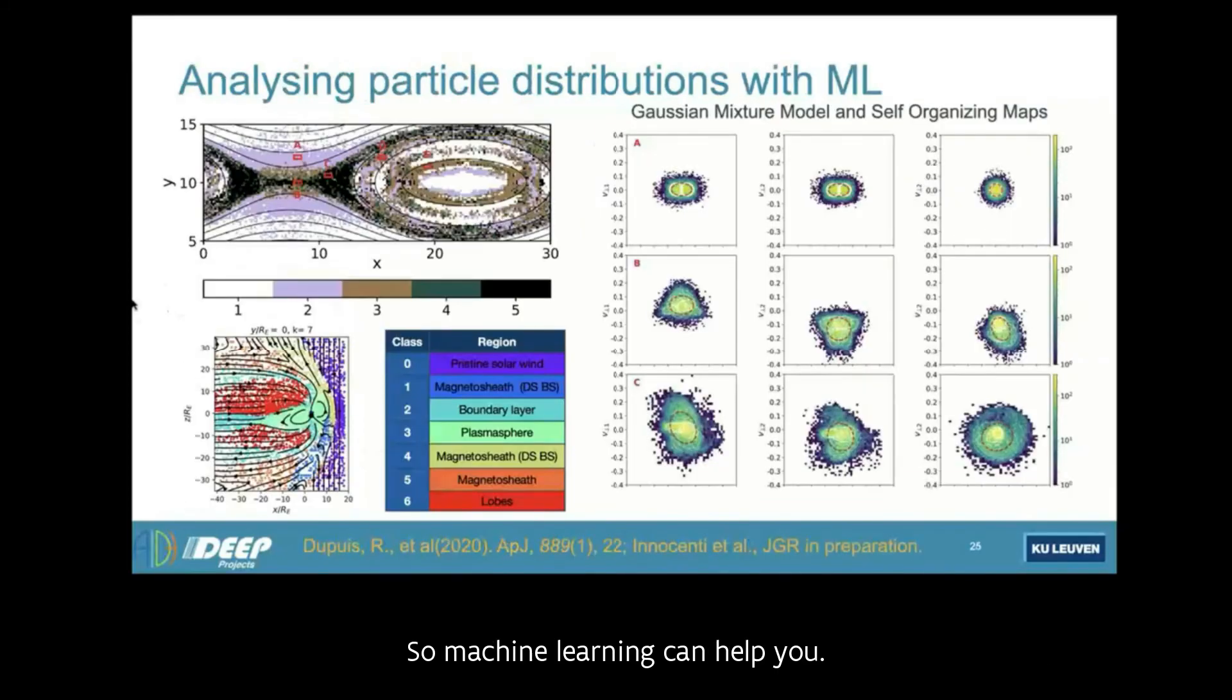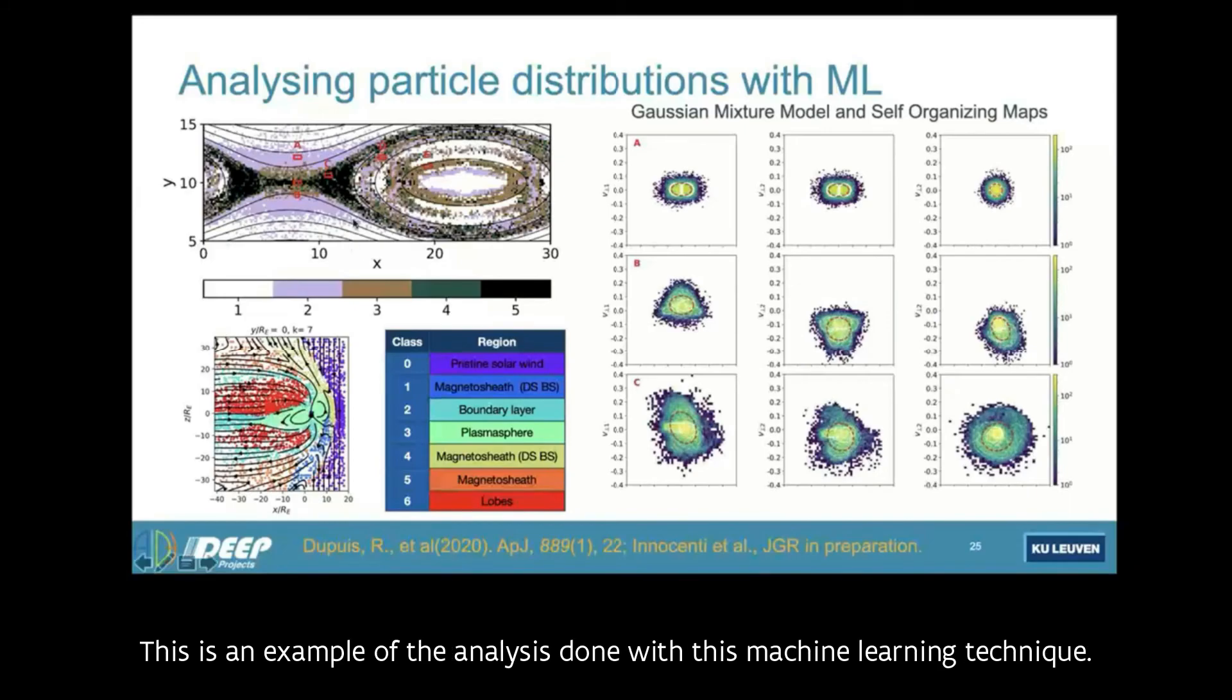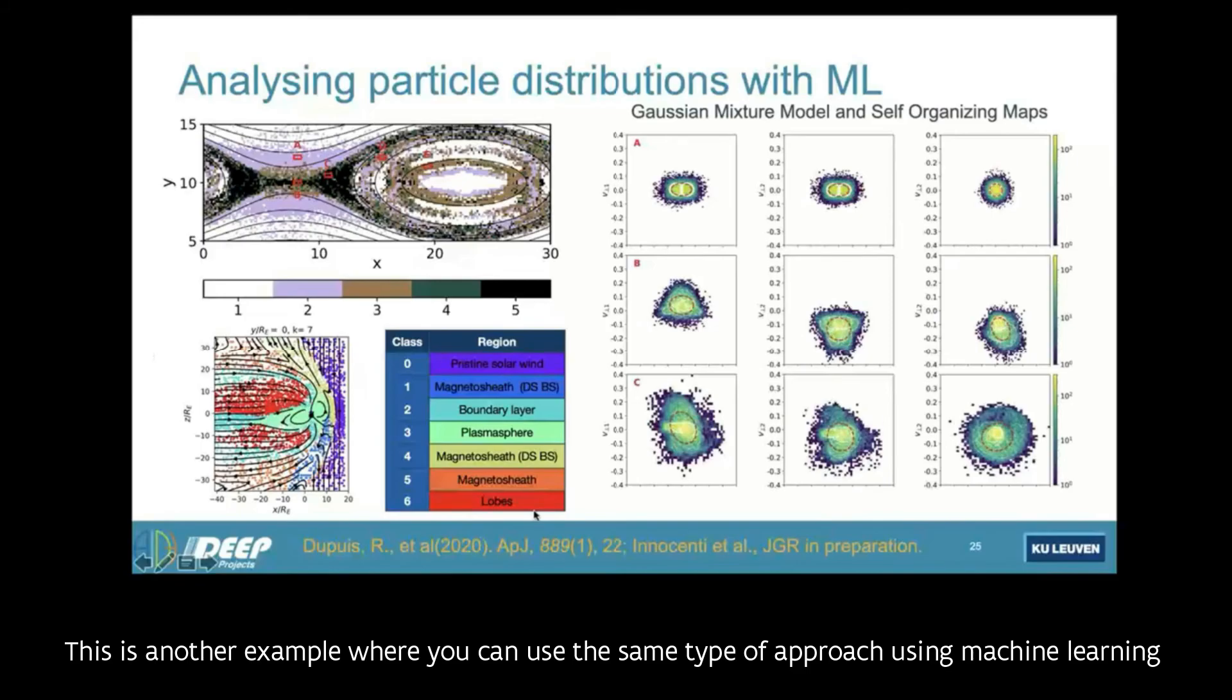So machine learning can help you. This is an example of a recent work that we did in making a number of categories of how many - so it's a classification, how many classes of distribution, some of two, some of three, some of five, or whatever number of components. And this is done automatically everywhere. And the analysis can tell you where more action is going on because more action means the distribution function is more complex. This is an example of the analysis done with this machine learning technique.